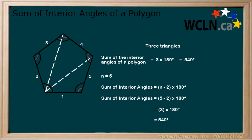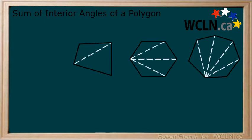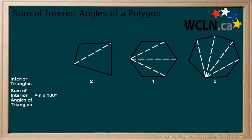Now let's look at a couple of other examples. Here we have three more polygons. For each part, feel free to press pause and work through it on your own first. First, draw your interior triangles. We can see that there are 2, 4, and 5 interior triangles. What is the sum of the interior angles based on the number of triangles for each example? 360 degrees, 720 degrees, and 900 degrees.